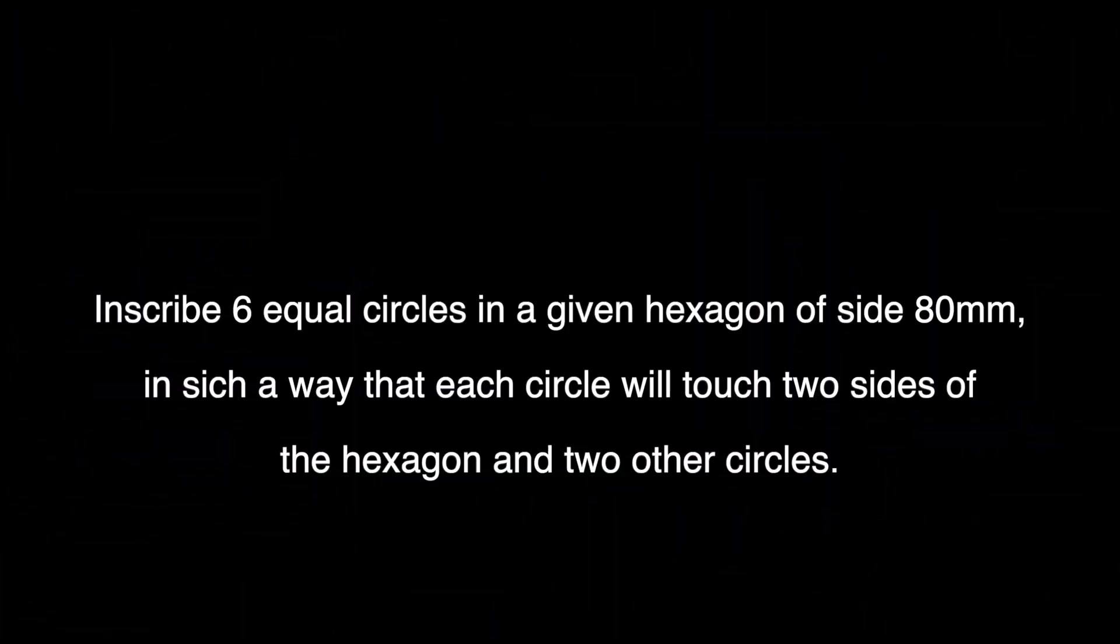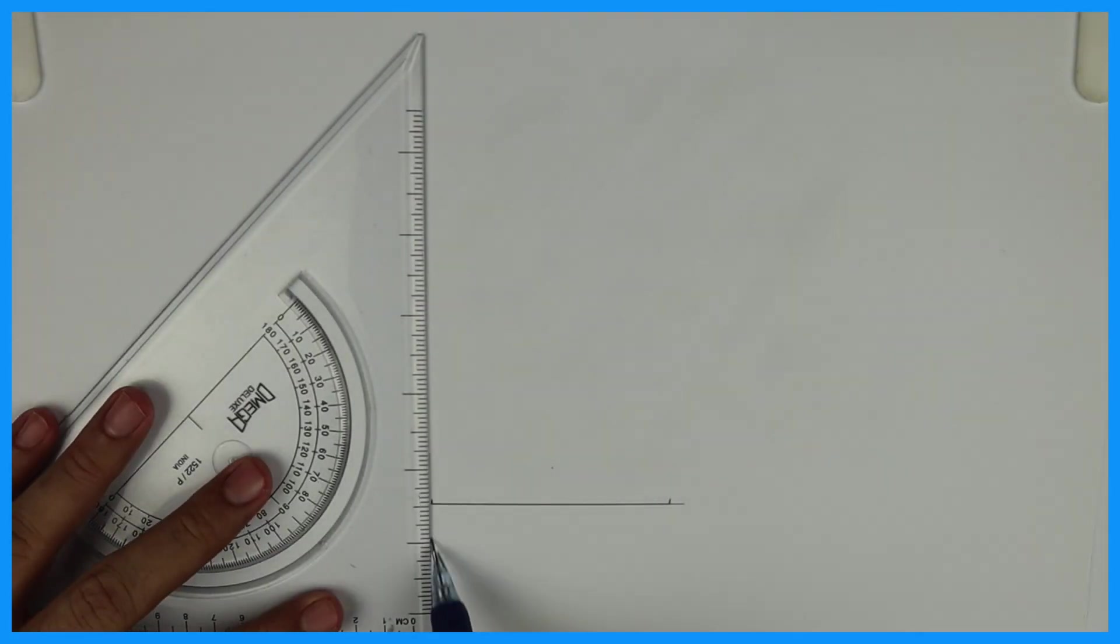Welcome to technical drawing. Today we are going to inscribe six equal circles in a given hexagon of side 80mm, in such a way that each circle will touch two sides of the hexagon and two other circles.